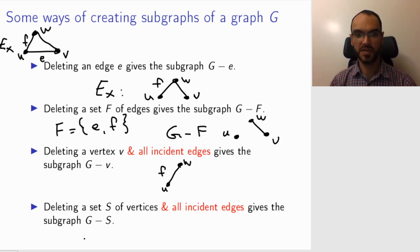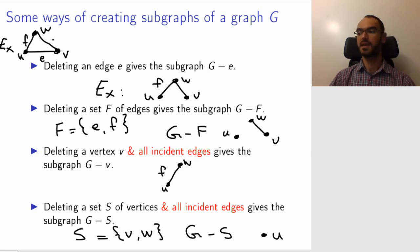And I can do the same with a set of vertices. So if my set of vertices is the vertices V and W, then I have to remove V and W, but also all the edges that are incident to V and W. So what I get from G minus S is just the vertex U. All the edges are gone because when I remove V and W, I'm removing endpoints from all edges. So these deletions of edges or vertices with their incident edges are natural ways to construct new graphs that are subgraphs of the graph I started with.